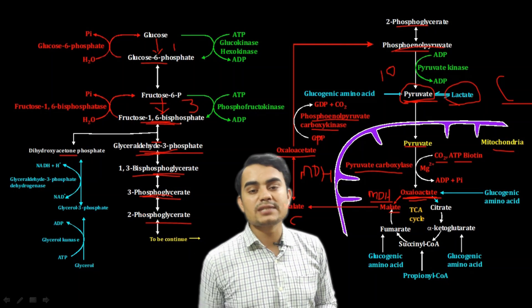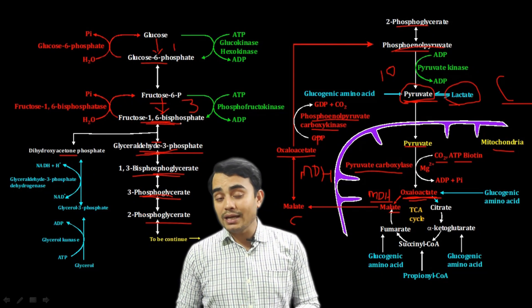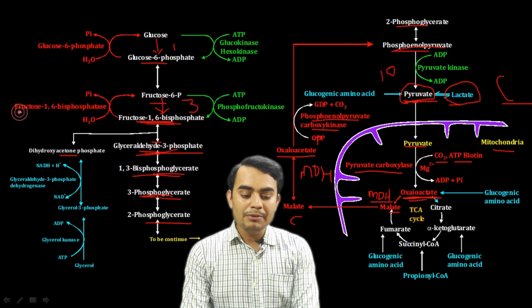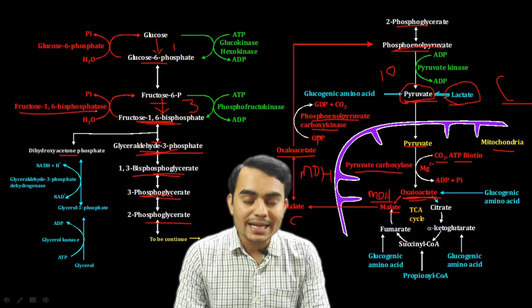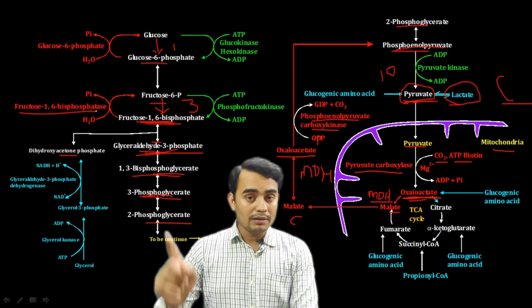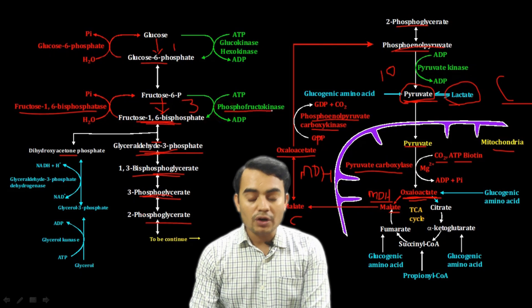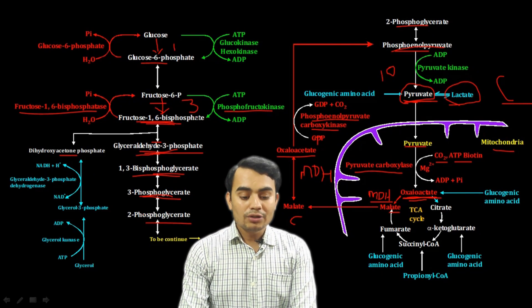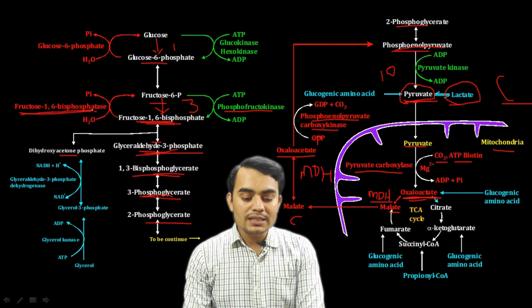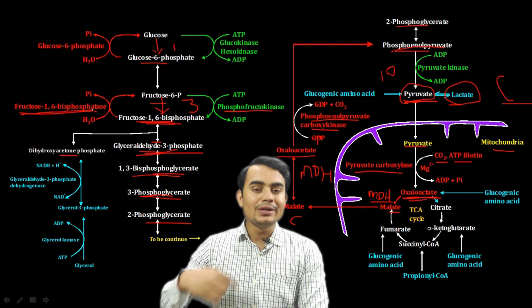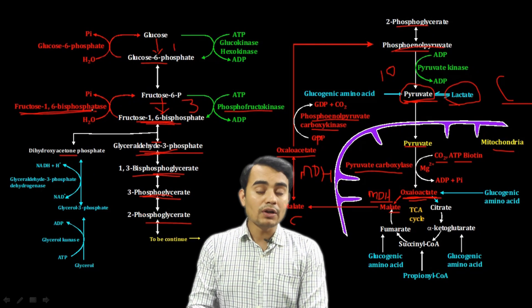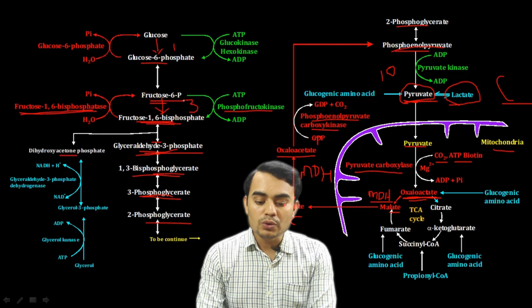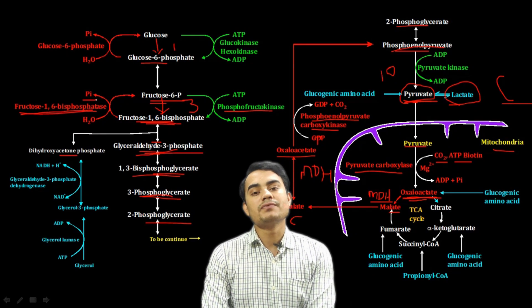Now fructose-1,6-bisphosphate cannot be directly converted to fructose-6-phosphate via the reversible glycolysis step. So here another enzyme is used: fructose-1,6-bisphosphatase, instead of the glycolysis enzyme phosphofructokinase. Fructose-1,6-bisphosphatase utilizes a water molecule and removes an inorganic phosphate group to form fructose-6-phosphate.